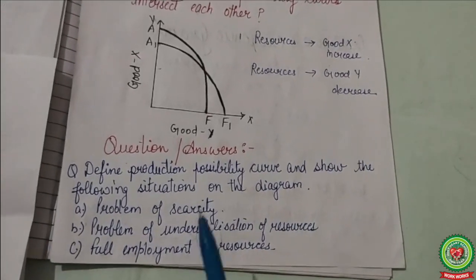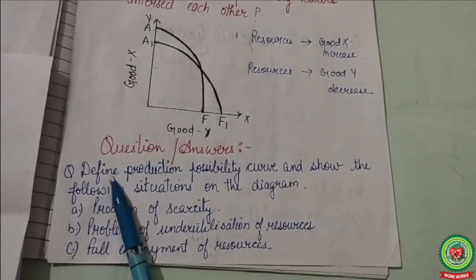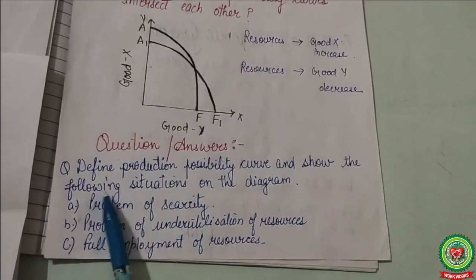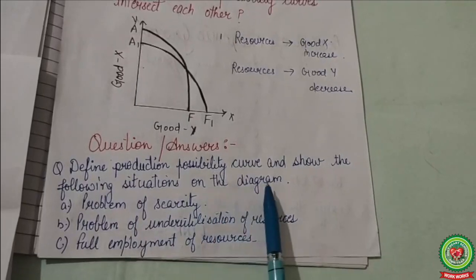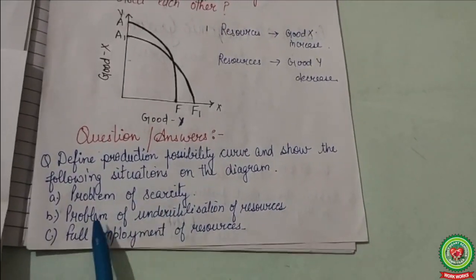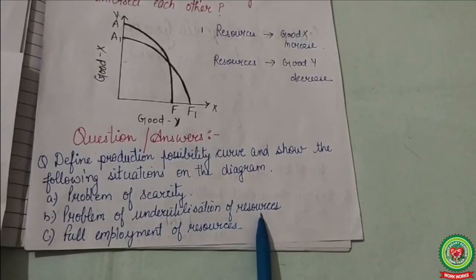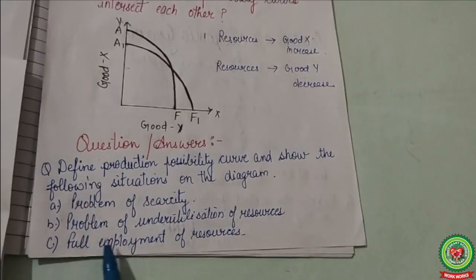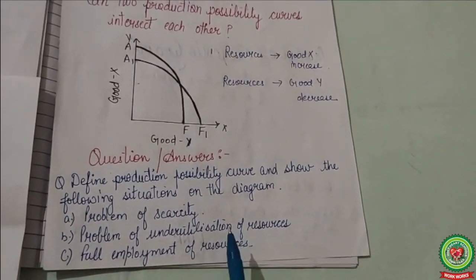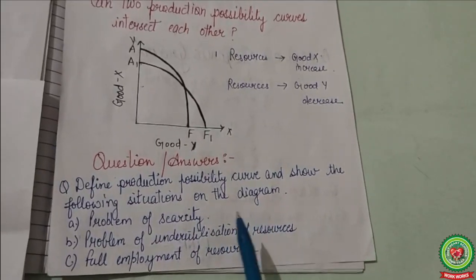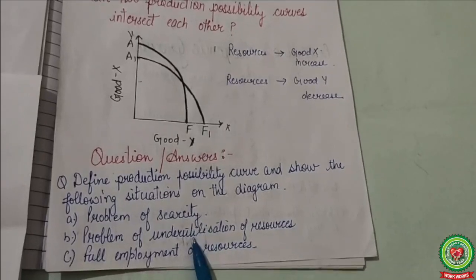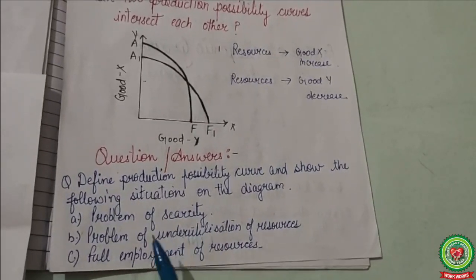This is all about the central problems and the Production Possibility Curve. The question for you to answer is: define the Production Possibility Curve and show the following situations on a diagram — the problem of scarcity, the problem of under-utilization of resources, and the problem of full employment of resources. Go through various links and other sources to write a better answer for this question.